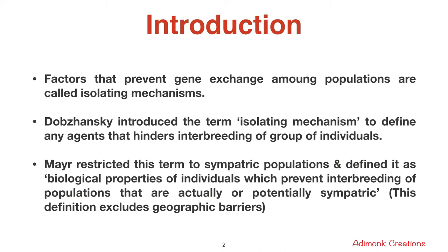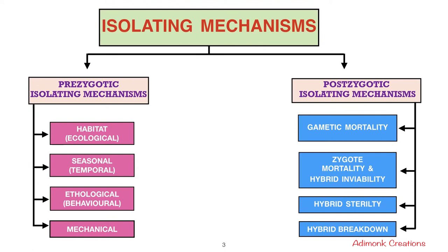Mayr restricted this term to sympatric populations and defined it as biological properties of individuals which prevent interbreeding of populations that are actually or potentially sympatric. There are different types of isolating mechanisms, and two important groups are pre-zygotic isolating mechanisms and post-zygotic isolating mechanisms.